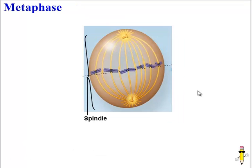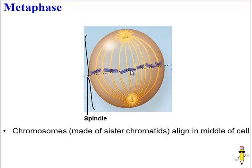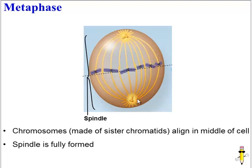This is followed by metaphase. I like to think of M for middle, because in metaphase the chromosomes — made of sister chromatids — are lining up in the middle of the cell. This step is super important because it ensures that the new cells that form get all of the right genetic information. You can also see that at this point the spindle is fully formed, stretching from the two poles of the cell all the way to the middle where the chromosomes are lined up.